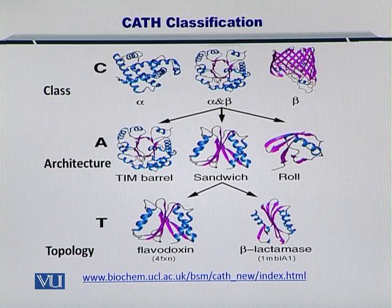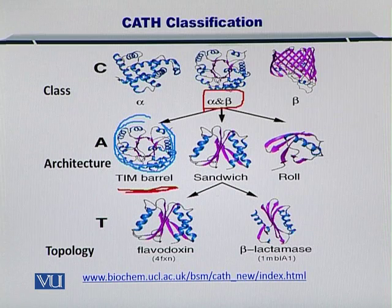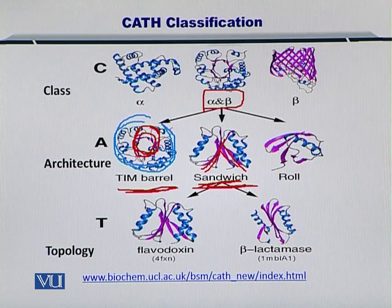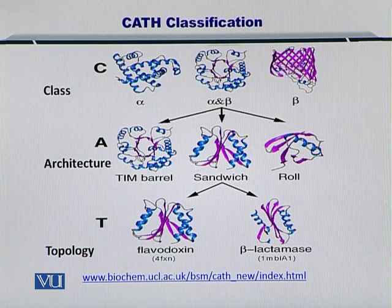Alpha and beta means that you have alpha helices and beta sheets mixed together, and you can organize them into various different combinations. The first one is the Tim barrel, where the alpha helices surround the architecture and the beta sheets are in the middle. Similarly, for a sandwich, you have the beta sheets in the middle with alpha helices surrounding them. And for a roll, you have the alpha helices with beta sheets rolling over the alpha helix.